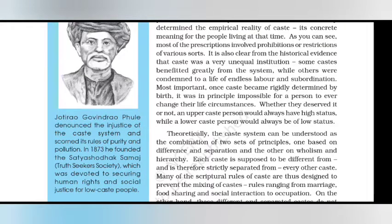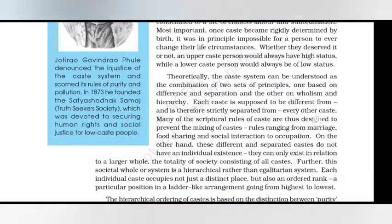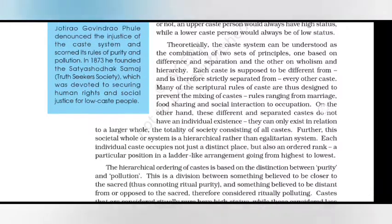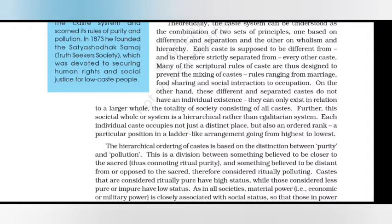It is very clear from historical evidence that caste was a very unequal situation. Some castes benefited greatly from the system while others were condemned to a life of endless labour and subordination. Once caste became rigidly determined by birth, it was in principle impossible for a person to ever change their life circumstances. Theoretically, a caste system can be understood as a combination of two sets of principles: one based on difference and separation, and the other on holism and hierarchy. Many of the scriptural rules of caste are designed to prevent mixing of castes in marriage, food sharing, and social interaction.